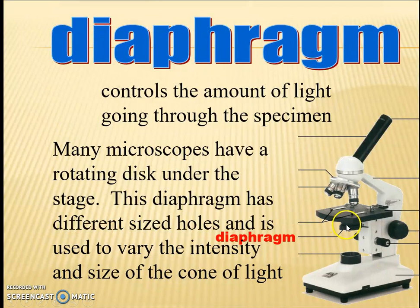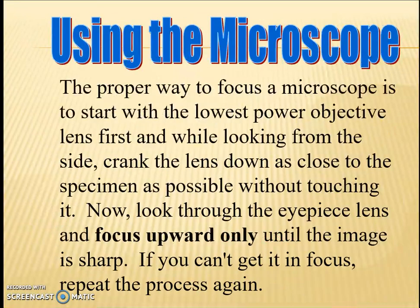Below the stage you will find a small structure called the diaphragm, which controls the amount of light passing through the specimen.